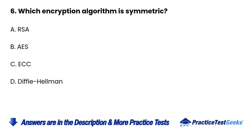Question 6: Which encryption algorithm is symmetric? A. RSA. B. AES. C. ECC. D. Diffie-Hellman.